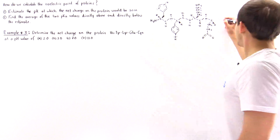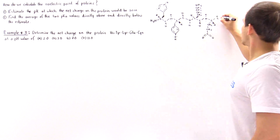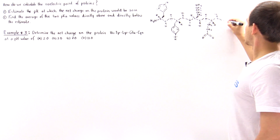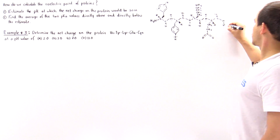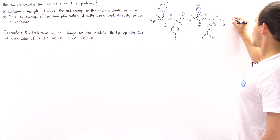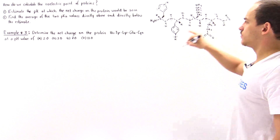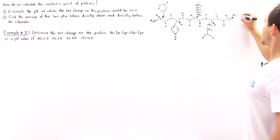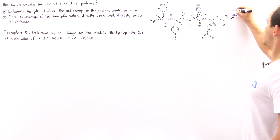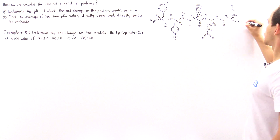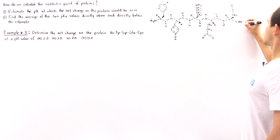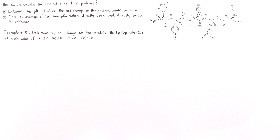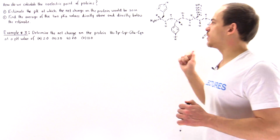Finally, we have cysteine. We have the nitrogen, then the central carbon with H going into the board. For cysteine, the side chain group is a CH2 group with a sulfur bound to an H. We finish off this peptide by drawing the terminal alpha carboxyl group. This is our five amino acid peptide.